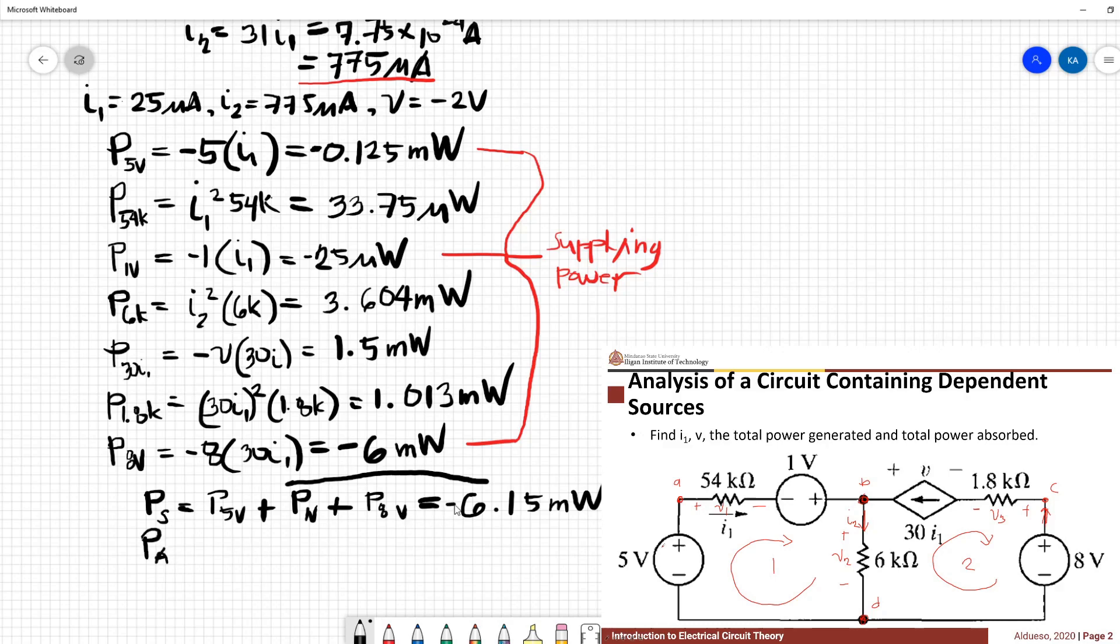So the total power absorbed - the total power absorbed is P_54k plus P_6k plus the dependent source plus power at 1.8k, which is equivalent to 6.15 milliwatts.